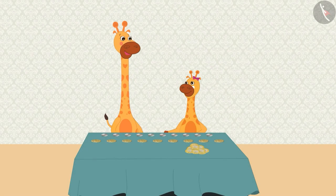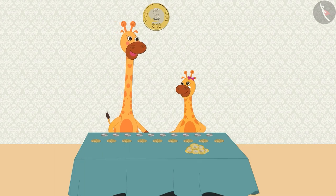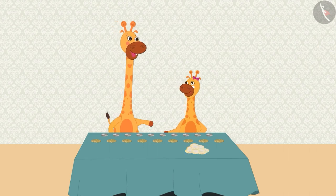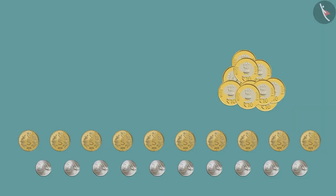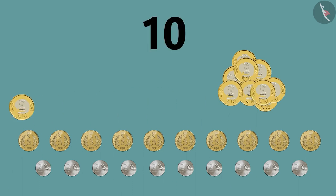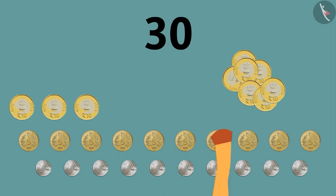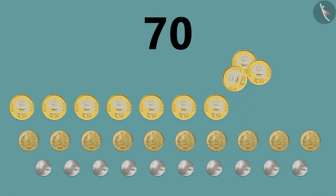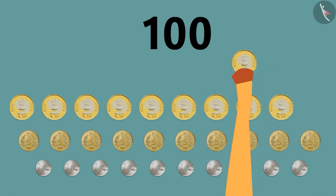Now there are only 10-rupee coins left. Should we start counting them too? Yes mom, I am having a lot of fun. Then come on, count these 10-rupee coins with the help of skip counting by 10. Then, Gaffee starts to count: 10, 20, 30, 40, 50, 60, 70, 80, 90, 100.